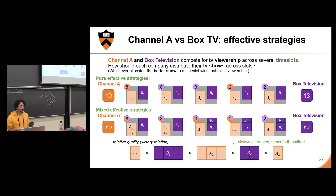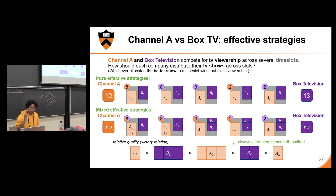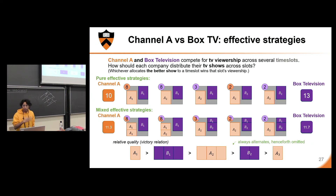With this notion of relative quality, once we group resources into equivalence classes, it is guaranteed to always alternate, because the alternation is what determines when a resource distinguishes between others. We'll omit the victory relation from now on and say that A1 beats B1, B1 beats A2, and so on.